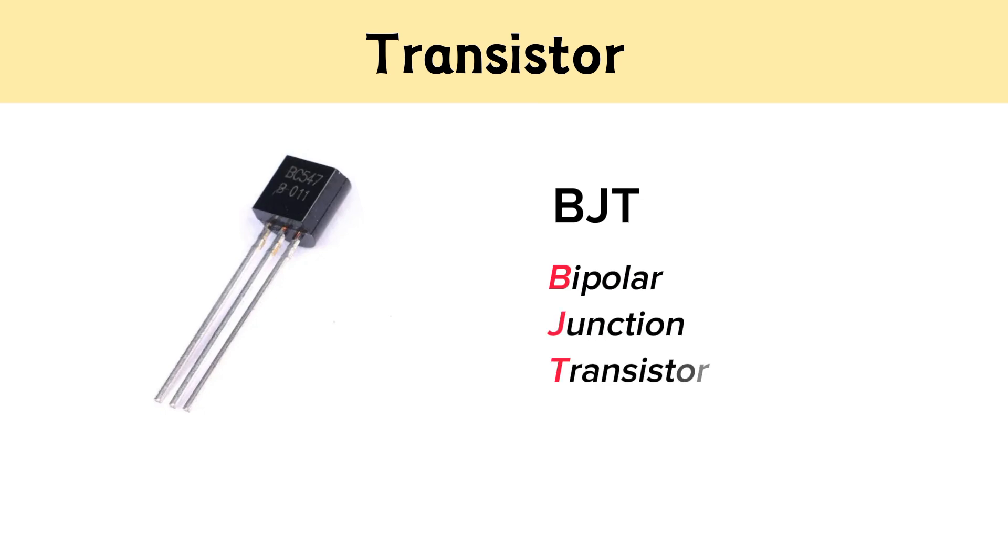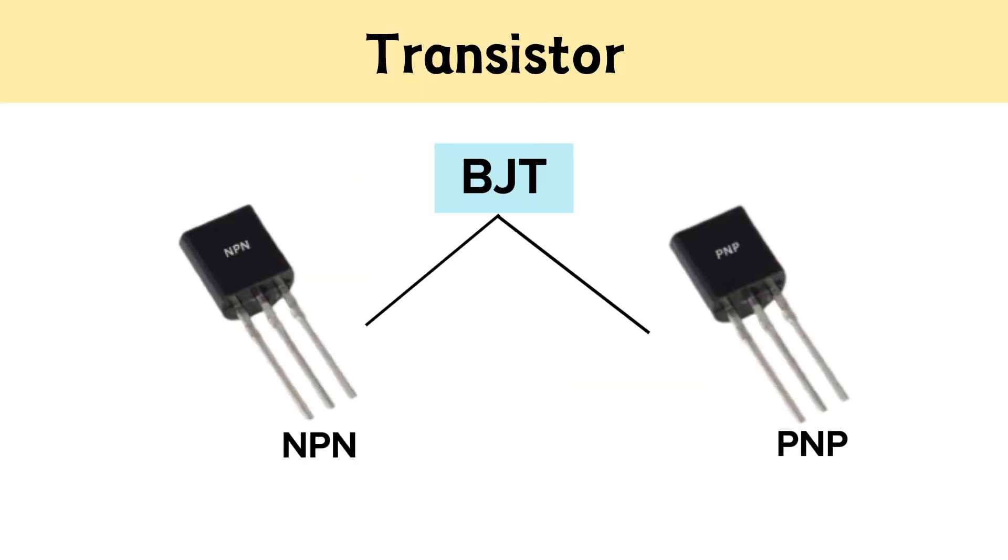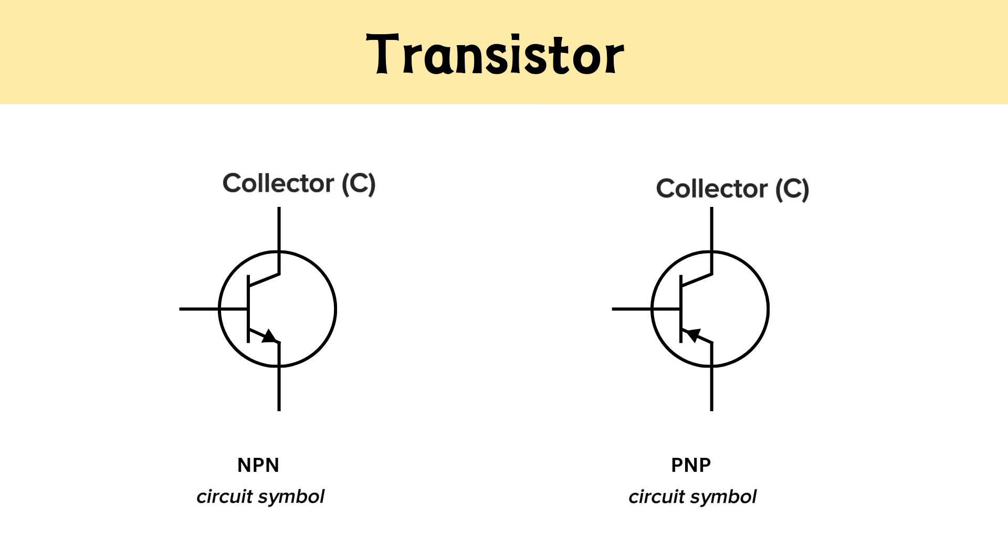BJT, or bipolar junction transistor, has two types: NPN and PNP. Both NPN and PNP transistors have a circuit symbol like this. These are the collector C, base B, and emitter E terminals. Both symbols look almost the same, but the main difference is the direction of the arrow at the emitter terminal. In NPN, it points outward, while in PNP, it points inward.